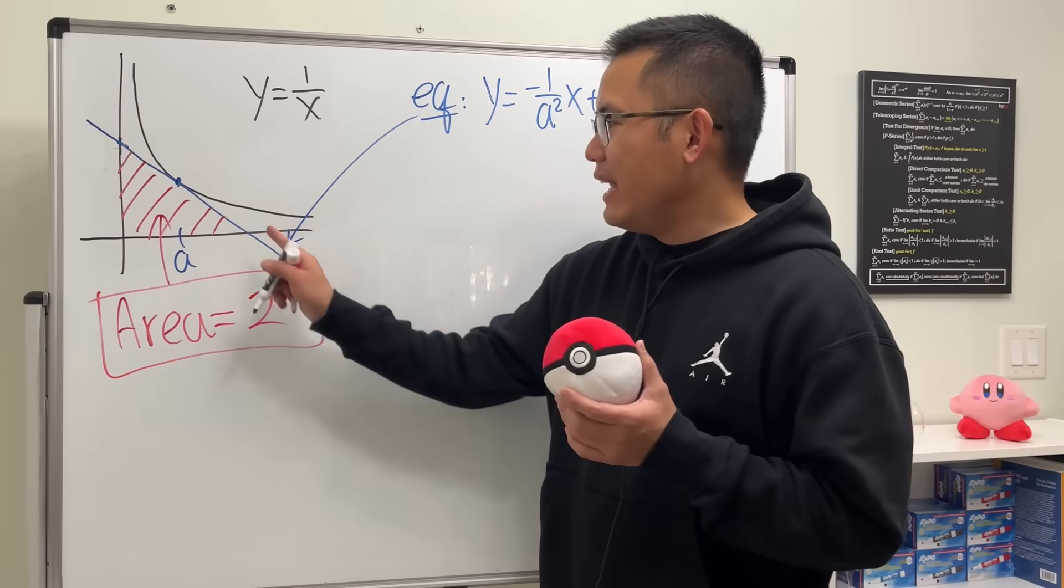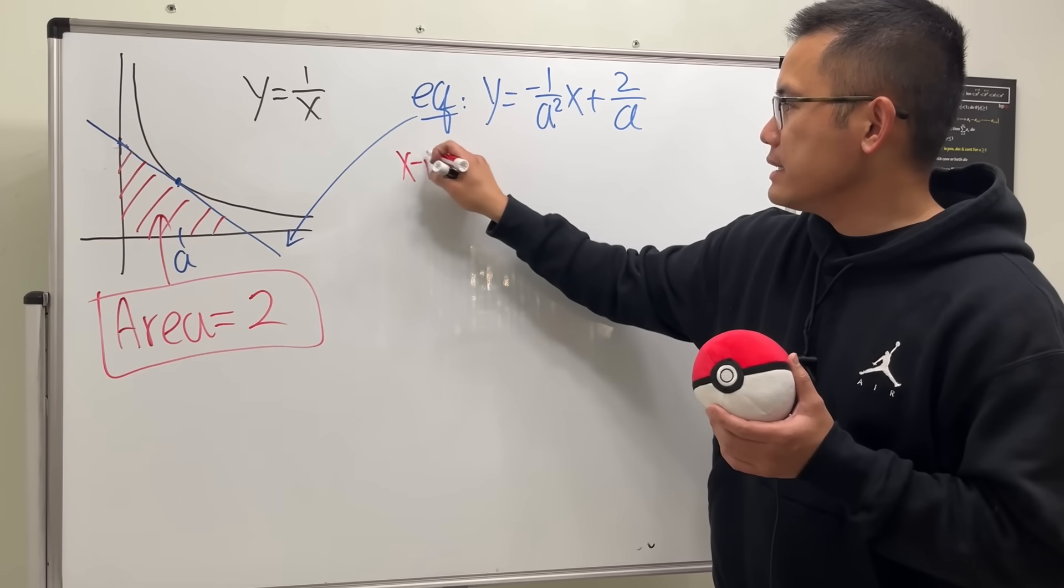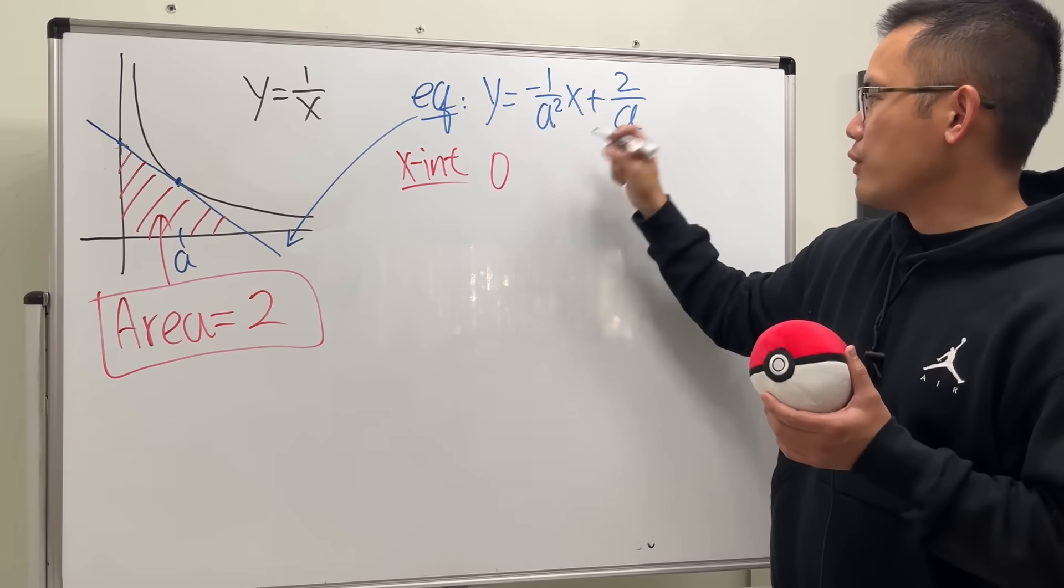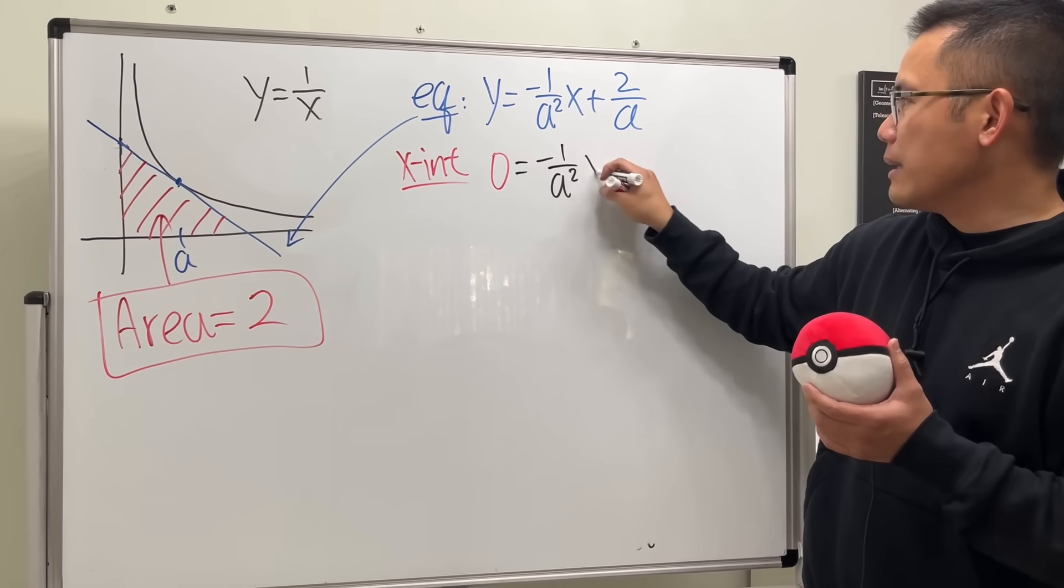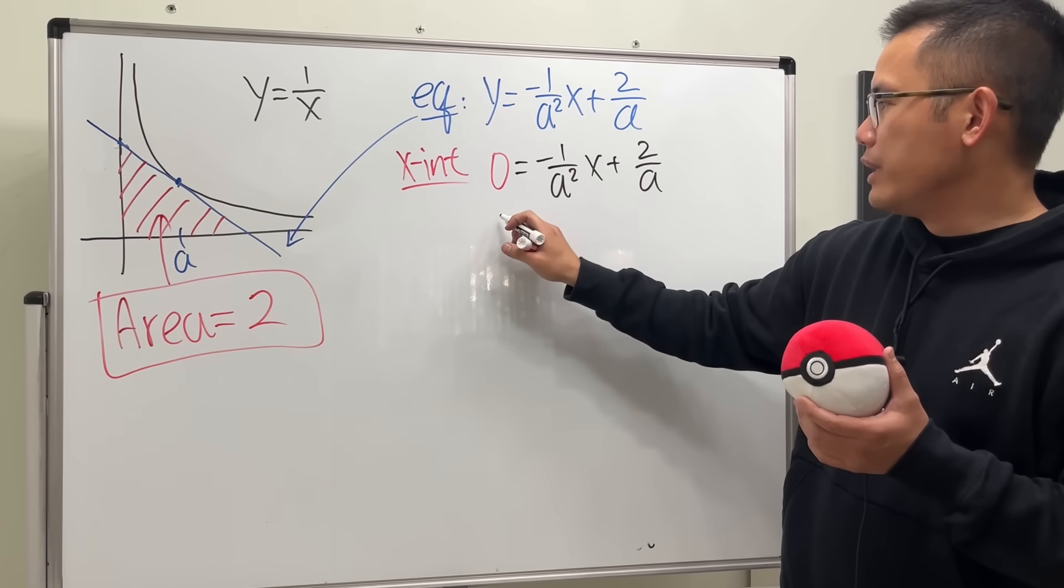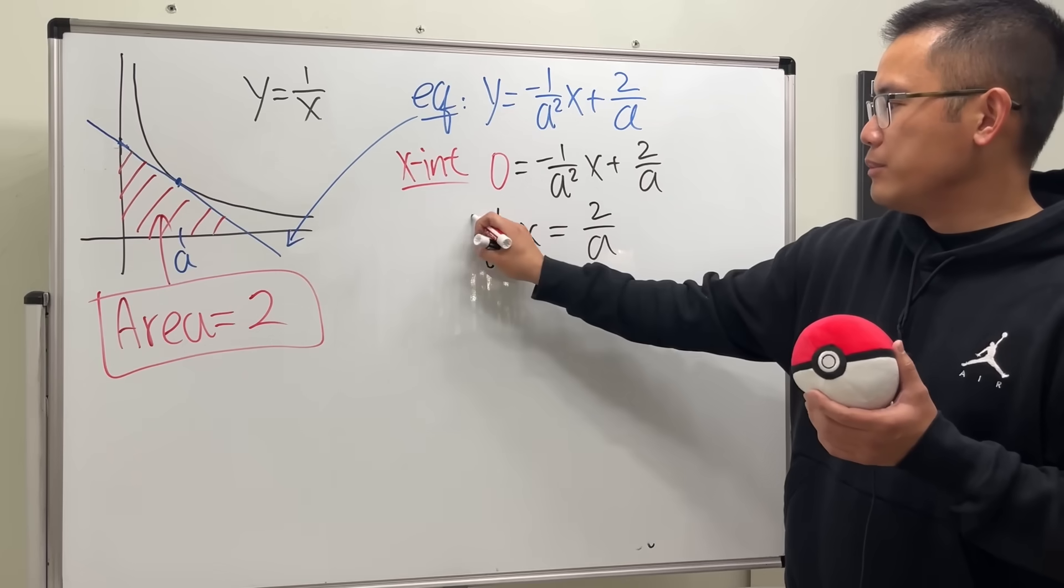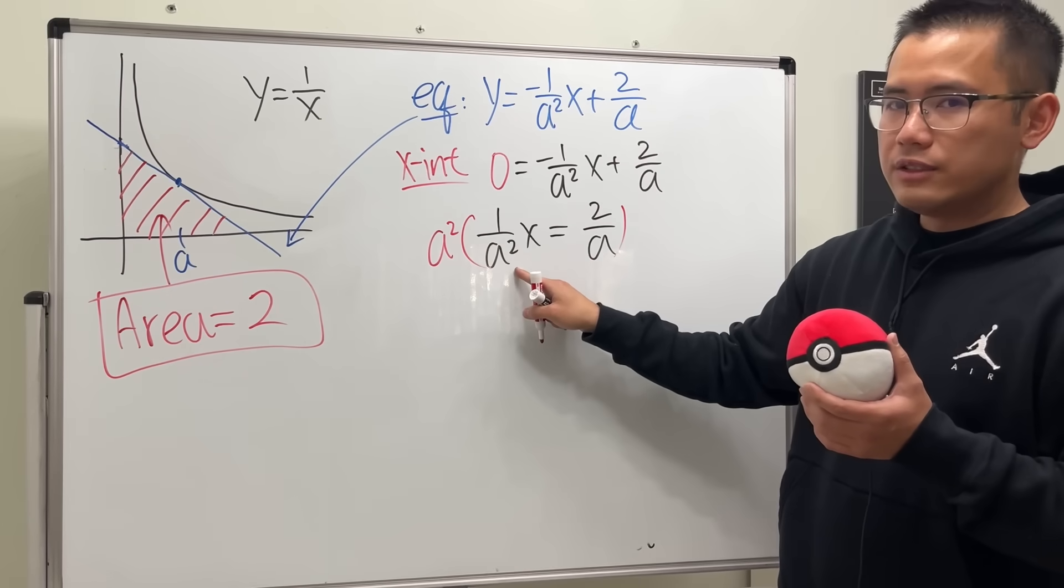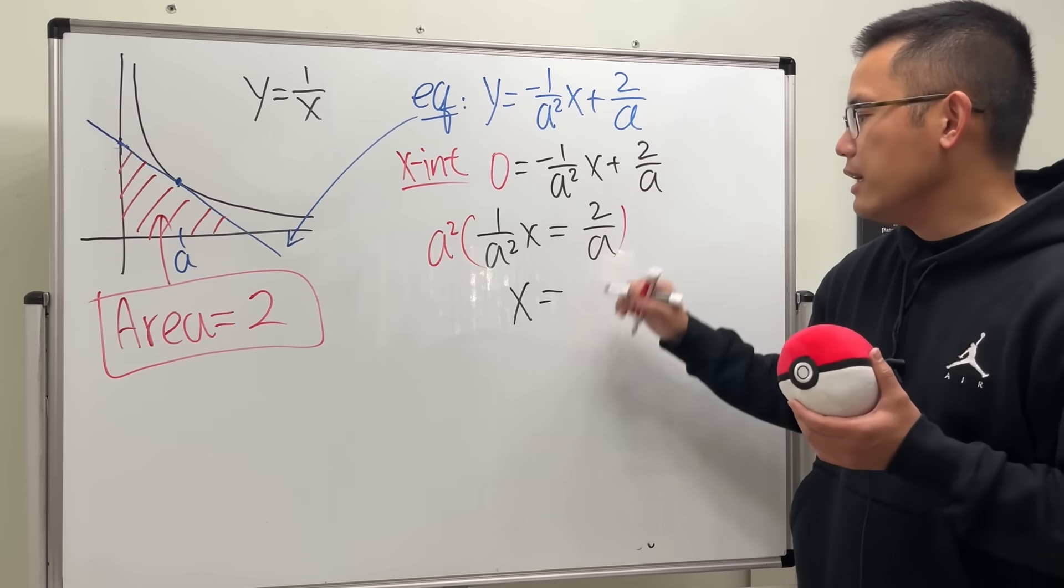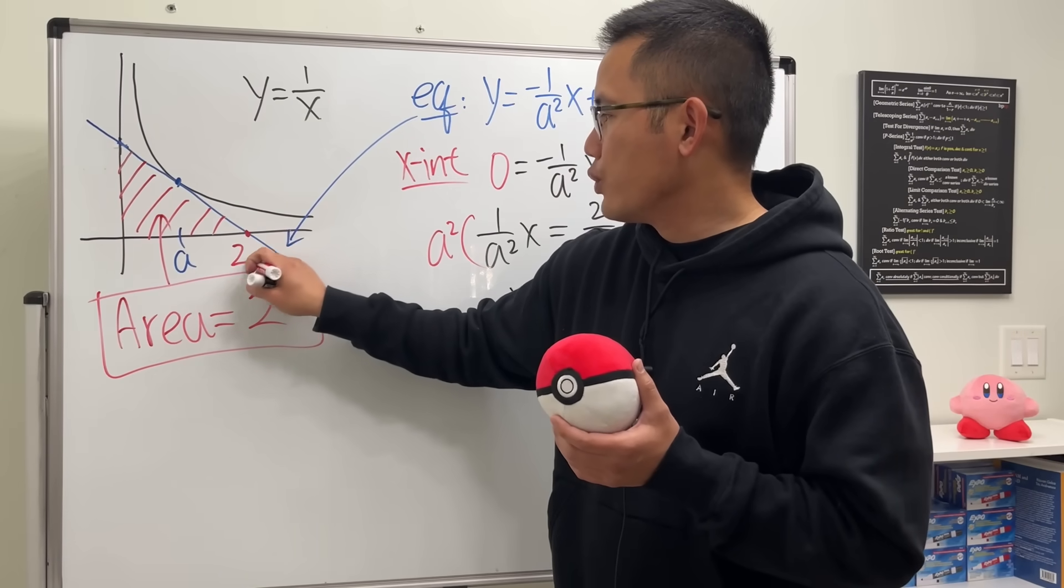And now we just have to find the x-intercept and also the y-intercept. To find the x-intercept, we just have to make y equal to 0. So we put y is equal to 0 and then solve for x. So this is equal to negative 1 over A squared times x plus 2 over A. Move this to the other side, we get positive 1 over A squared x, and that's equal to 2 over A. And I'm just going to multiply both sides by A squared. This and that will cancel. We get x by itself. And then this and that will cancel, but we still have one more A. So we have 2A here. So as we can see, the x-intercept right here is 2A.